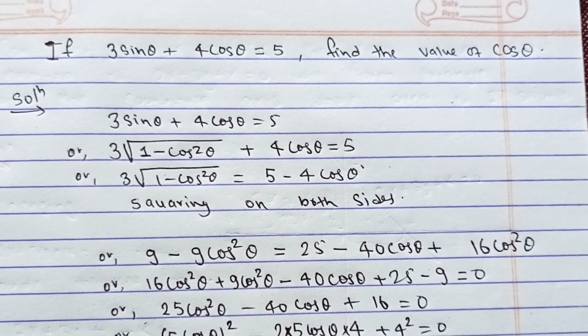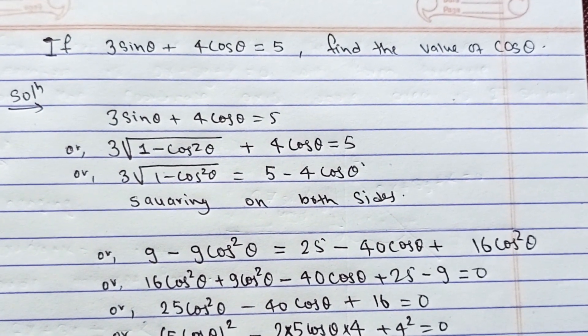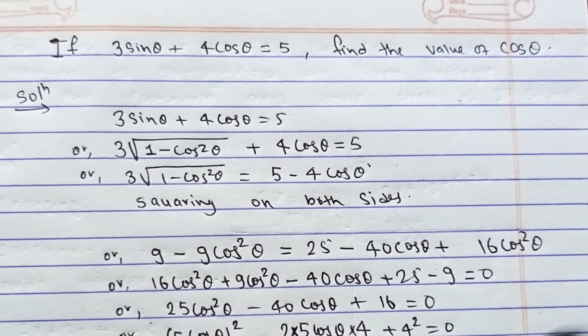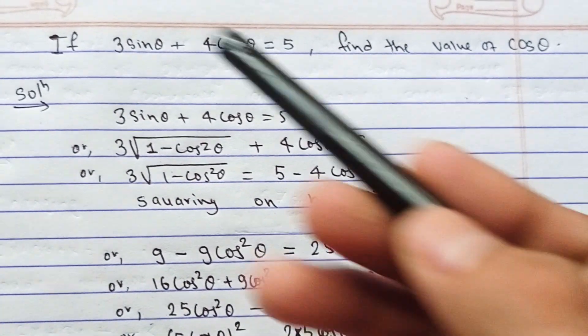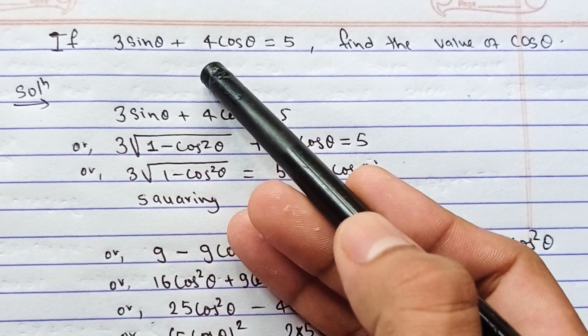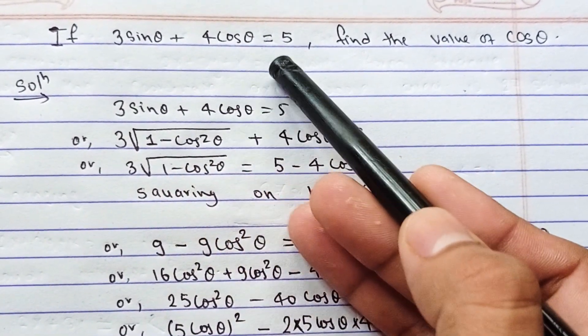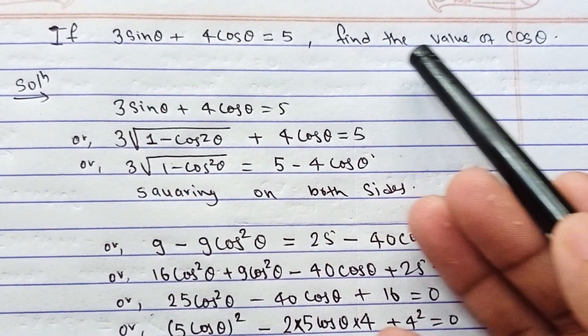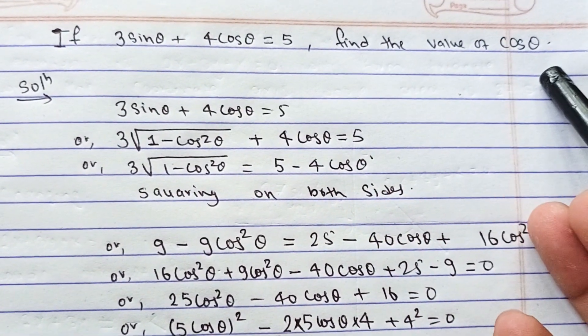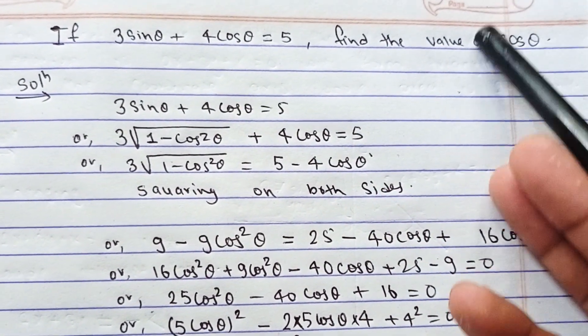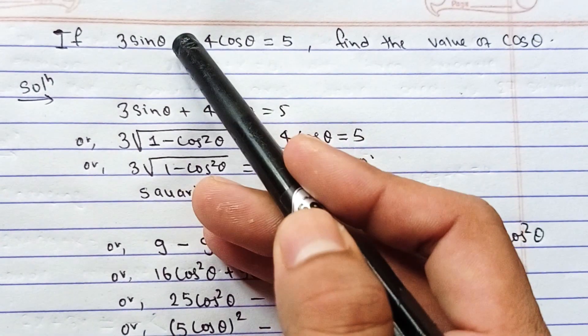Hello everyone. I found a question from trigonometry: if sin θ (3 sin θ + 4 cos θ) equals 5, find the value of cos θ. We have to find the value of cos θ from this equation.